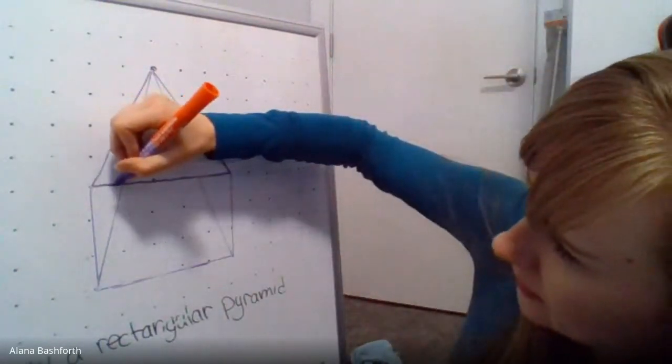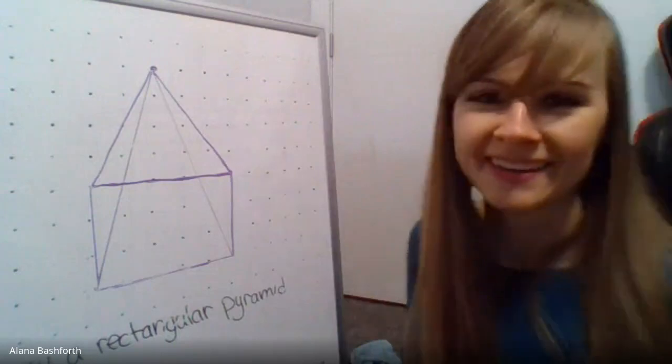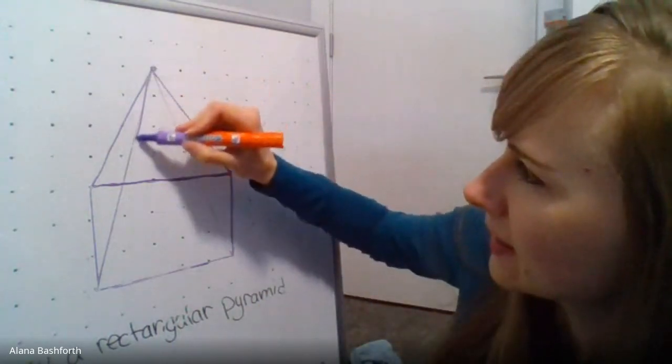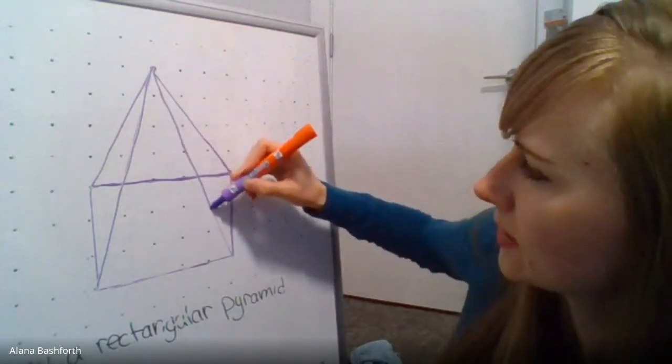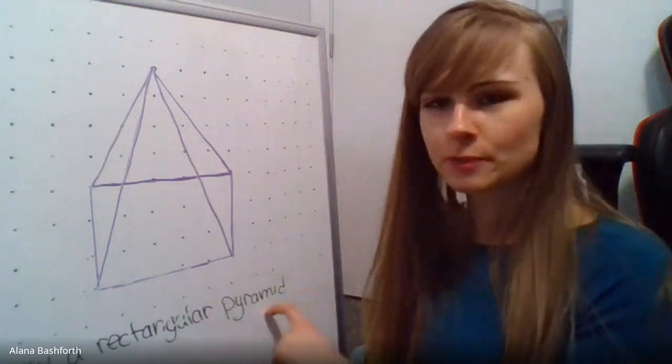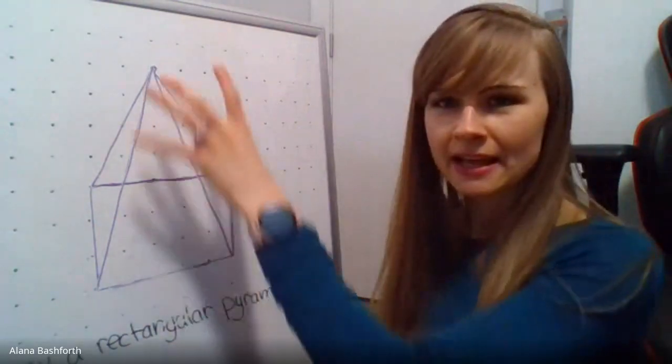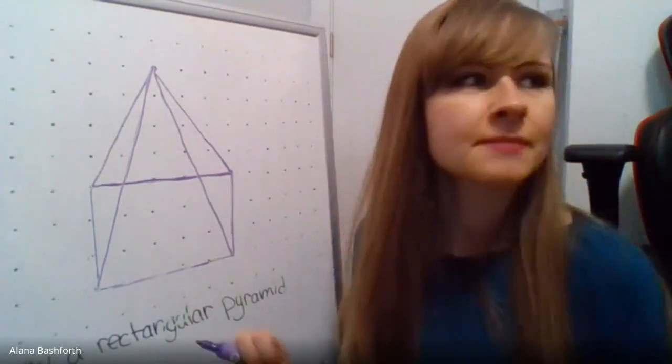There we go. You can see them better now. This is a rectangular pyramid - here's the rectangle part, and then it meets at one point, so that makes it a pyramid. Next, we are going to draw the other shape.